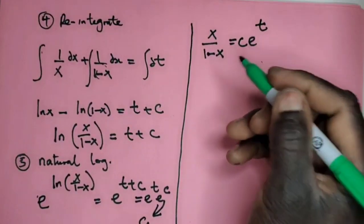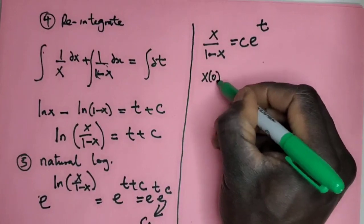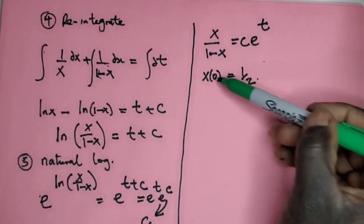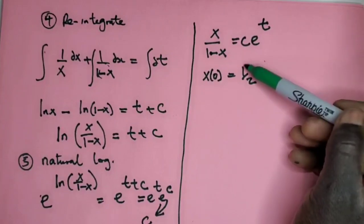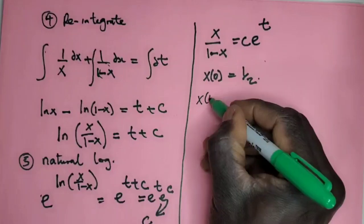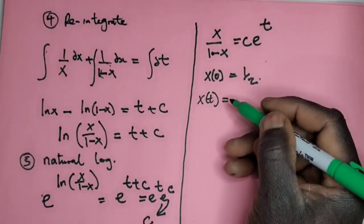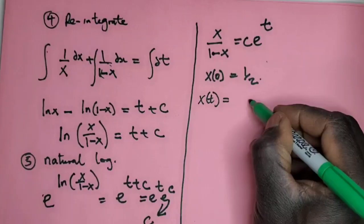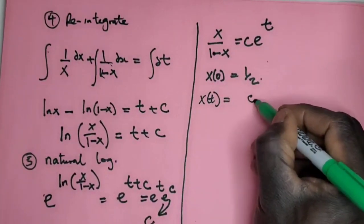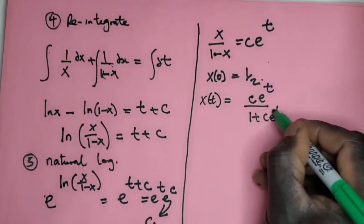Now we have an initial condition that says x(0) = 1/2. So that means at time 0, x = 1/2. So we need to find the solution of x, so that's going to be x(t) = Ce^t/(1 + Ce^t).